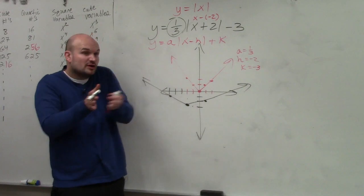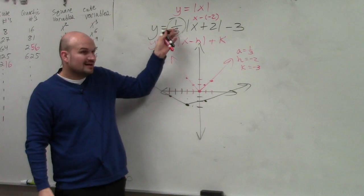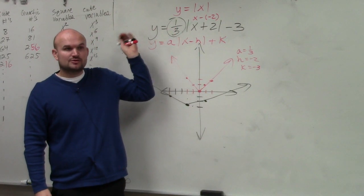That 1/3 is stretching it horizontally or compressing it vertically. I got that based on the a value. Anybody have any questions on transformations or what the graph looks like?